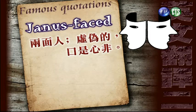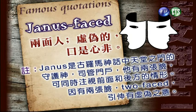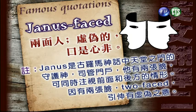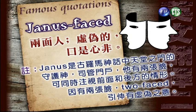两面人，虚伪的，口是心非。我们这个要做注释：Janus是古罗马神话中天堂之门的守护神，司管门户。他有两张脸，可以同时注视前面和后方的情形。因为有两张脸，所以Two-faced隐含有虚伪之意。